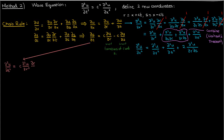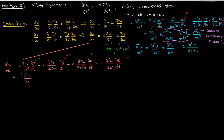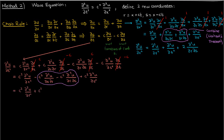Now let's apply the same chain rule to find the second partial of u with respect to t. Again, partial r partial t and partial s partial t are c and negative c respectively. So once we plug that in, here's what we'll end up with: c squared times the second partial of u with respect to r minus c squared times the mixed partial of u with respect to r then s, minus c squared times the mixed partial of u with respect to s then r, plus c squared times the second partial of u with respect to s. Now we can combine the mixed partial derivatives again by Clairaut's theorem, and after simplifying this expression, here's what we end up with for the second partial of u with respect to t.